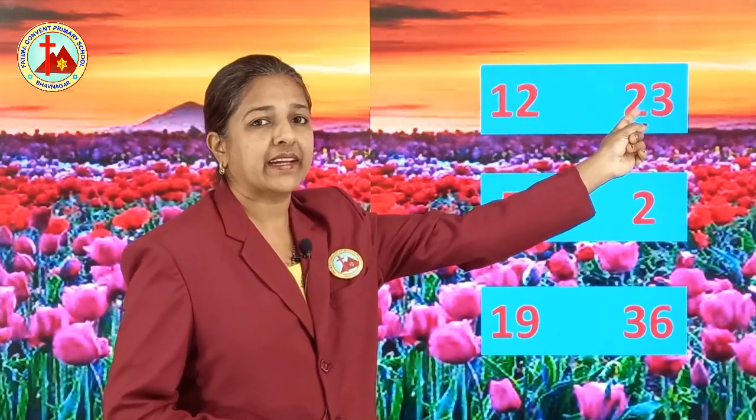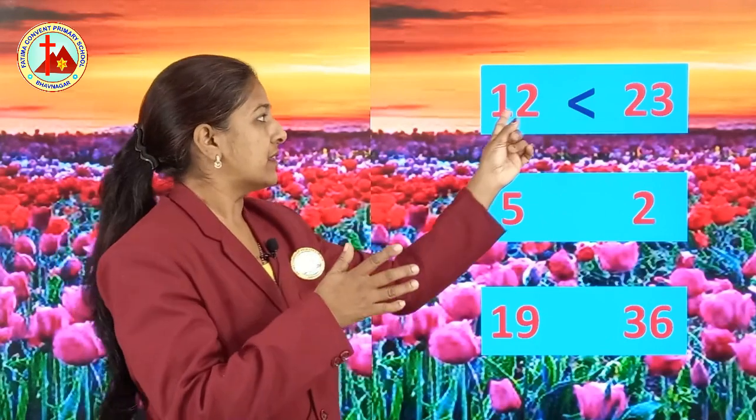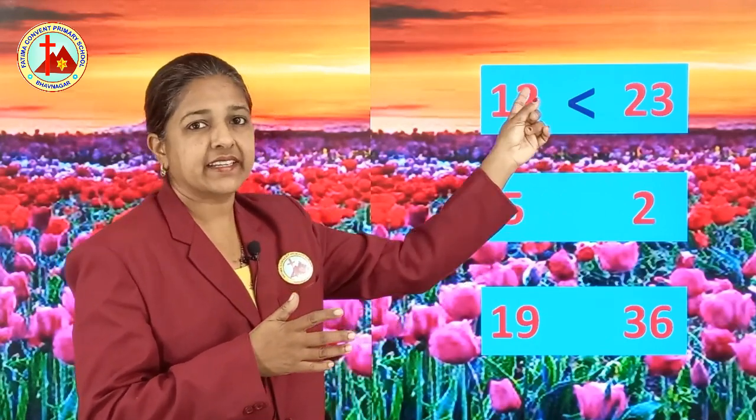Some numbers are given. You have to see which number is lesser or bigger, and according to that, you have to put the correct sign. First number is 12 and the other number is 23. 12 is smaller than 23 — 12 is lesser than 23. So we have to put this sign. When the mouth is close, there you have to put lesser than — it is lesser than sign.